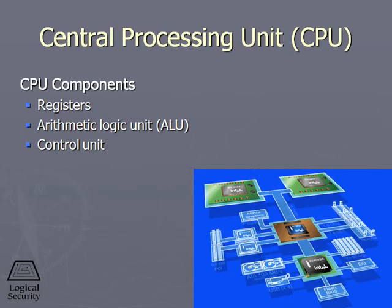Inside the CPU we have registers, which are small sections of very high-speed memory, located very close electrically and physically to the CPU itself. Then there is the core of the CPU, the arithmetic logic unit, which does the vast majority of the work inside the CPU. And then we have the control unit, which acts as a traffic cop, coordinating the movement of instructions and data into and out of the CPU while it's being processed.